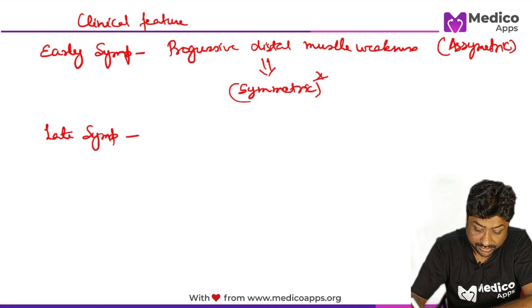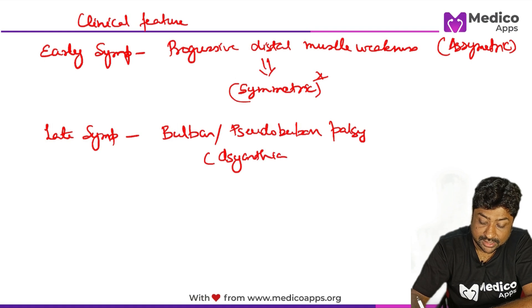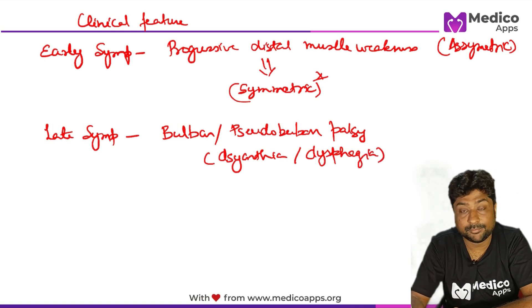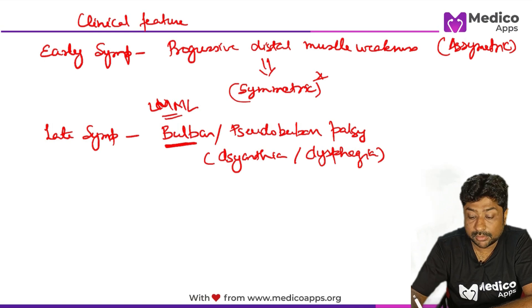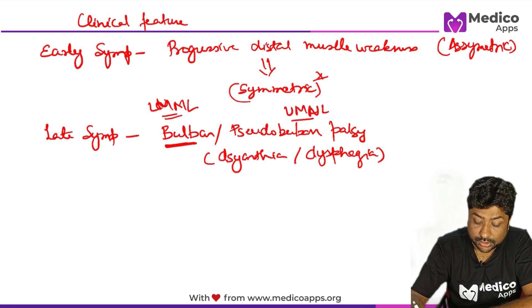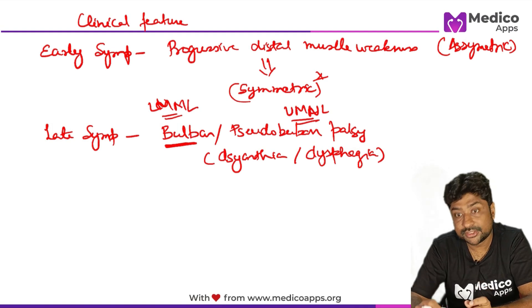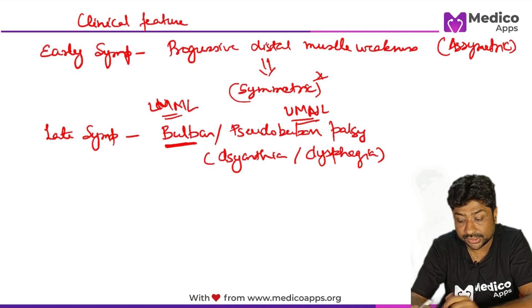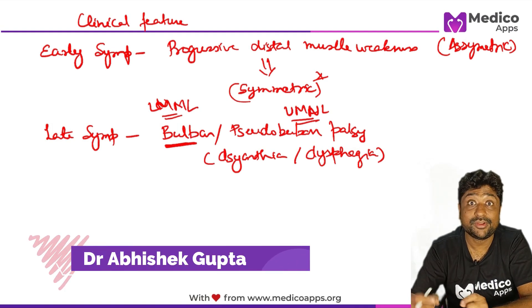As the disease progresses, the patient may start having bulbar or pseudobulbar palsy — meaning they will have dysarthria, that is difficulty in speaking, and dysphagia, difficulty in eating. If the palsy is due to lower motor neuron lesion, it will be bulbar palsy; if it is due to upper motor neuron lesion, it will be pseudobulbar palsy.